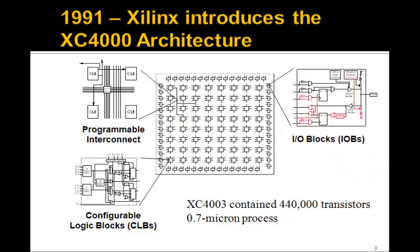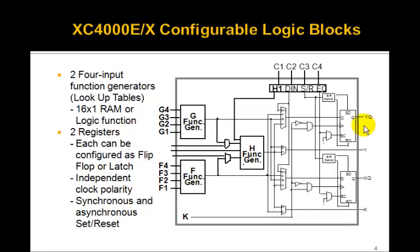So what's in the configurable logic block? The configurable logic block is made up of lookup tables. This is really a 16 by 1 RAM — there are 4 inputs and 1 output. You put in an address 0 to 15 and a single bit is stored. There are 3 of them in the CLB, and it also contains a couple of flip-flops, which we'll talk about in future lessons.